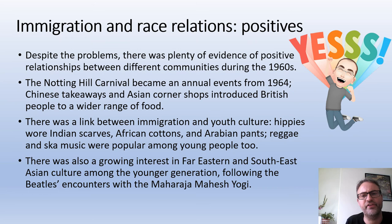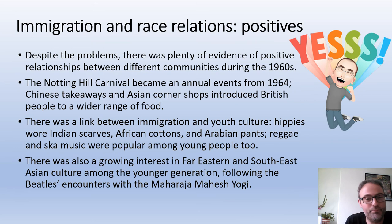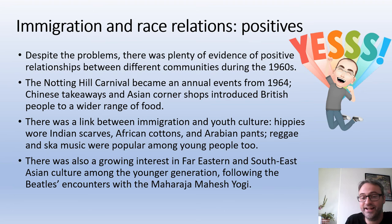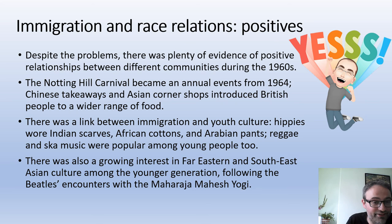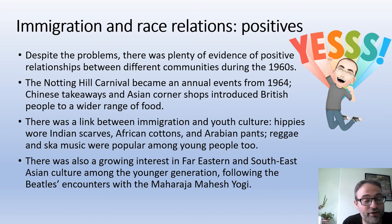Having said all of that, there were some definite positives and real signs of community cohesion. In London, the Notting Hill Carnival became a really famous and positive annual event from 1964 onwards. A lot of British people appreciated new Chinese takeaways and corner shops run by recent immigrants, and generally enjoyed being introduced to a much wider, more varied diet. Going back to youth culture, younger people very much embraced the positive aspects of immigration, with new music heavily influenced by Caribbean immigrants — particularly ska and reggae.